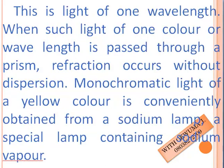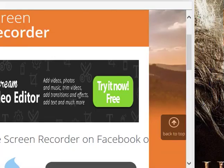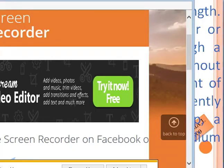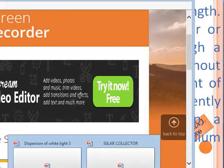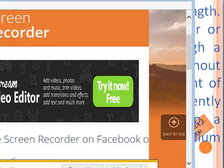Monochromatic light of a yellow color is conveniently obtained from a sodium lamp — a special lamp containing sodium vapor.